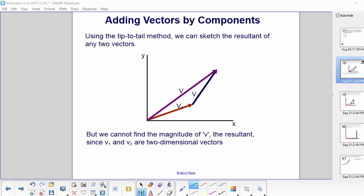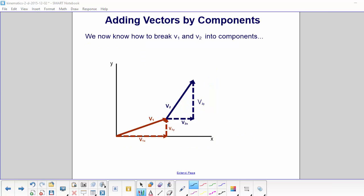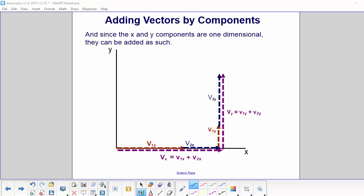Using the tip-to-tail method, we can sketch the resultant of any two vectors, but we can't find the magnitude of the resultant, since V1 and V2 are two-dimensional vectors. In order to add these two vectors, we have to break them up into their components. Then we can add the X and Y components separately.